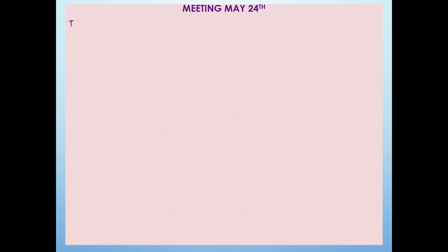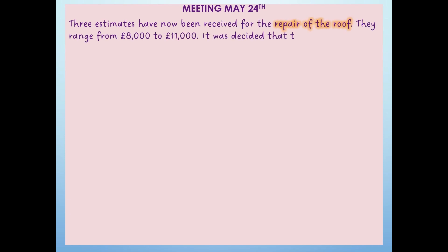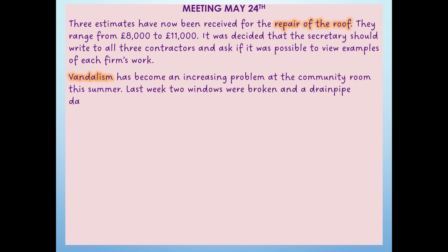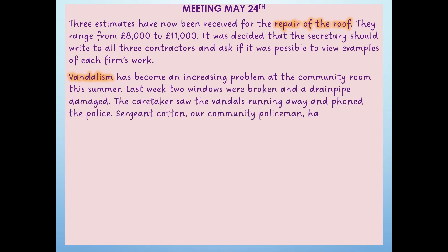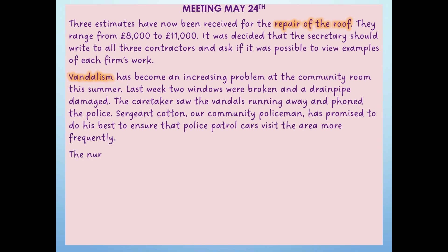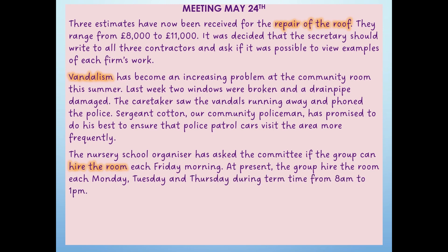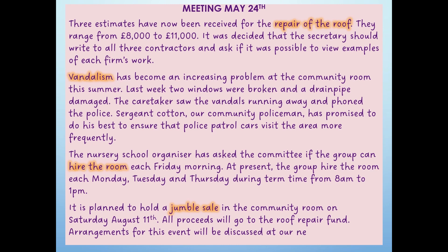OK, let's look at the answers. Paragraph 1 was all about the repair of the roof — the estimates or the costs. Paragraph 2 was all about vandalism. Paragraph 3 was all about the room hire, or the nursery school hiring the room. And did you spot paragraph 4? If you did, well spotted, because this isn't a very good way of starting a paragraph. However, it is a new topic and it's all about a jumble sale. How did you do?